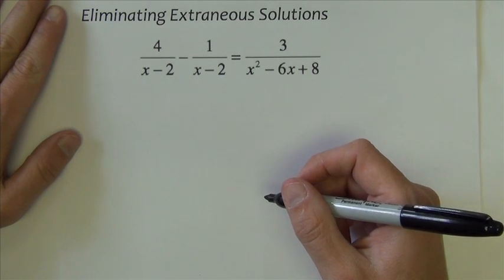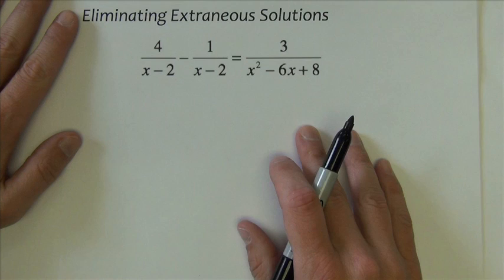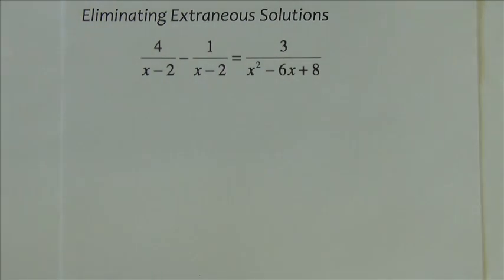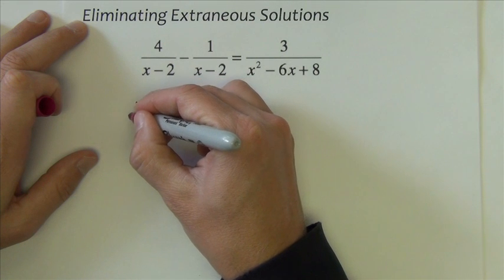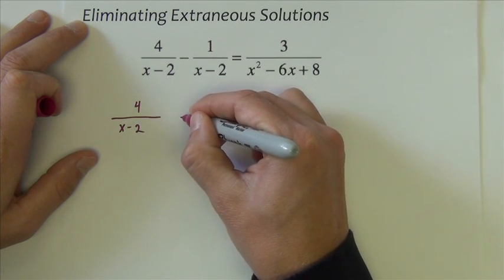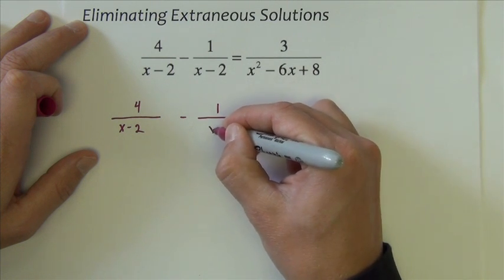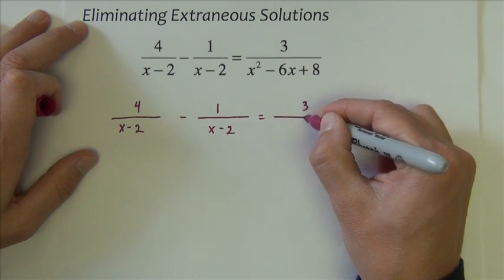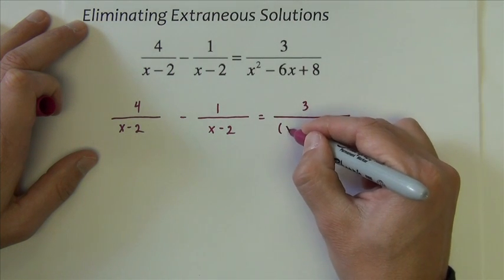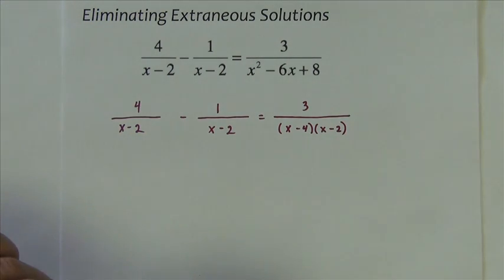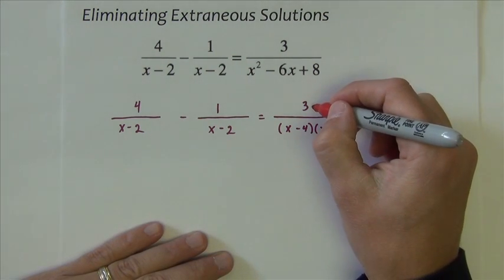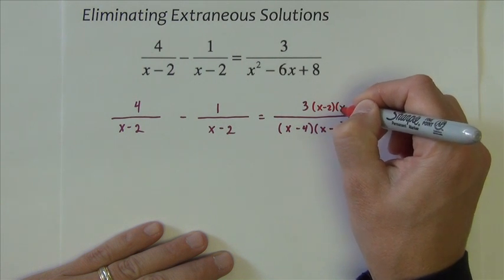The first thing I'm going to do in this problem is I'm going to start by factoring anything that I see that can factor, and generally that's always my first step. So I've got 4 over x minus 2 minus 1 over x minus 2 equals 3 over, and this will factor as (x-4)(x-2). So now I'm going to multiply everything by the common denominator, and the common denominator is (x-2) and (x-4).